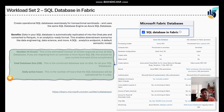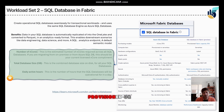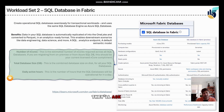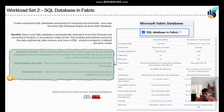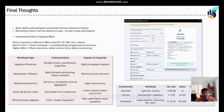Another workload is the Fabric SQL Database. Fabric Database is a serverless database, and questions include the number of vCores you want, the total size of data your database will store, and the active hours during business operations you want to keep the database active. All these questions from all workloads contribute to the estimation that Fabric provides.